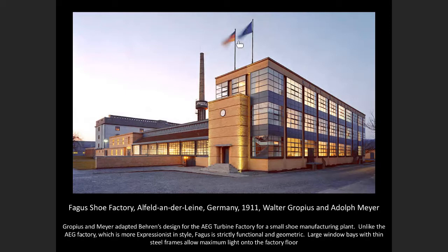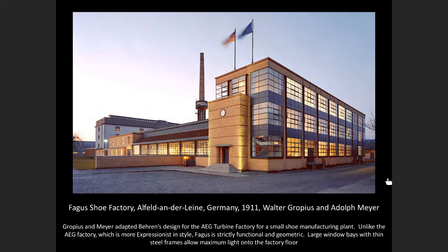He gets rid of the Dutch gambrel roof and goes with a straight flat roof with a parapet — another hallmark of what we'd consider Bauhaus international style architecture. There's a long wall of windows along the side, and you can see the columns expressed. In this case they're almost recessed rather than protruding as at the AEG turbine factory. Otherwise this is a wall of glazing to illuminate the factory within — his interpretation of what a factory building ought to look like.